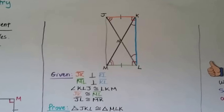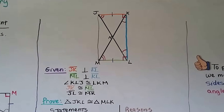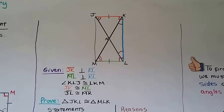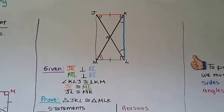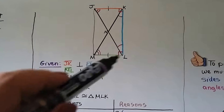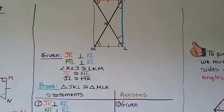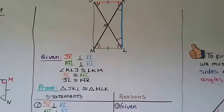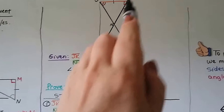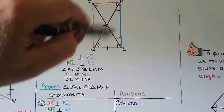For the second proof, notice there's an orange line, a green line, a blue line, and some arcs. The given states: segment JK (orange) is perpendicular to segment KL (blue); segment ML (green) is perpendicular to segment KL. Angle KLJ is congruent to angle LKM. Segment JK is congruent to segment ML, and segment JL is congruent to segment MK. We need to prove triangle JKL is congruent to triangle MLK — these triangles overlap.